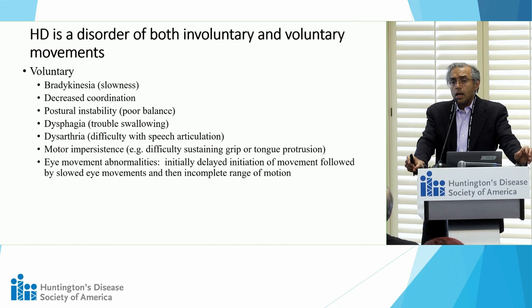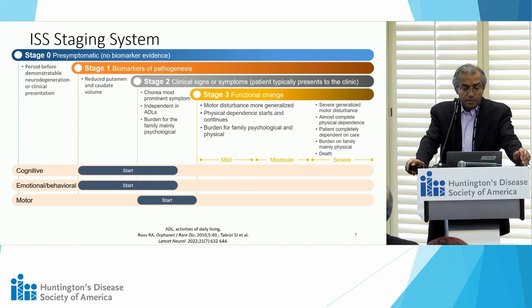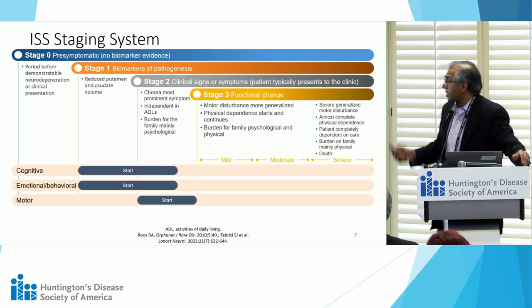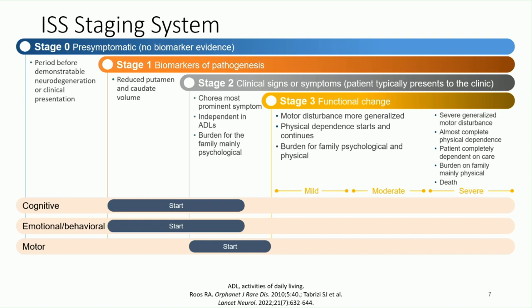Eye movement abnormalities are also seen — initially difficulties initiating movements, and then as the disease progresses the movements become slower, and the person with HD may have difficulties obtaining extreme ranges of motion up, down, right, or left. Many of you have become familiar with the newer ISS staging system of Huntington's disease, which includes a pre-symptomatic stage where an individual is gene positive but has no detectable abnormalities on examination, imaging, or blood and CSF findings.